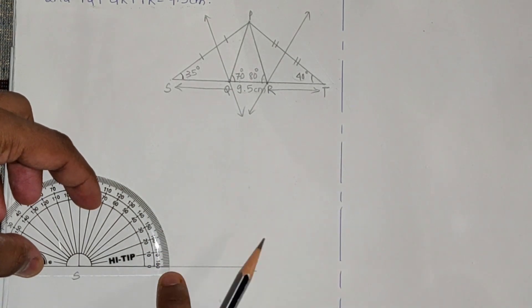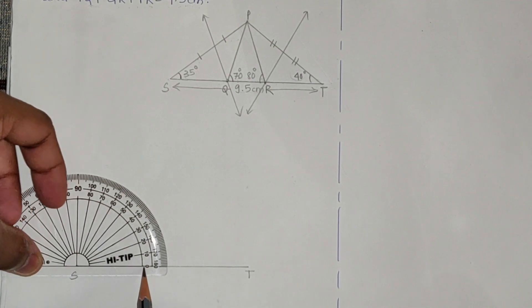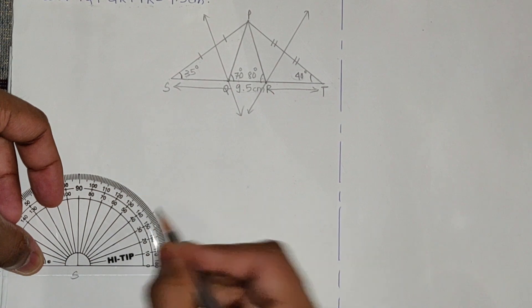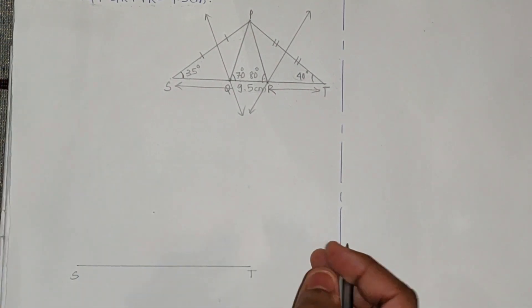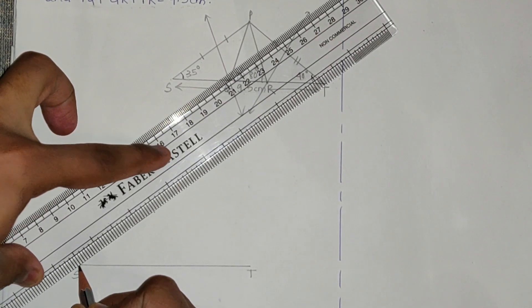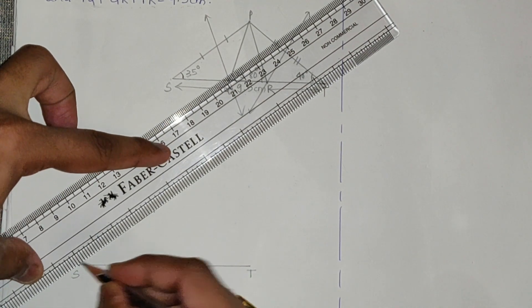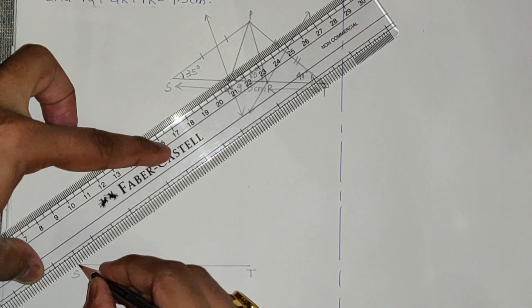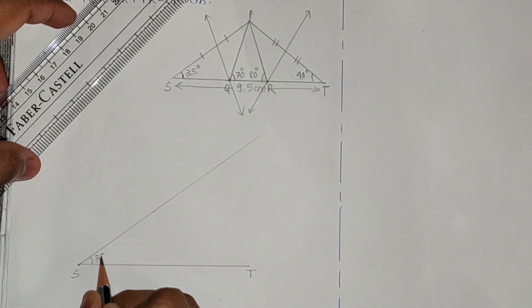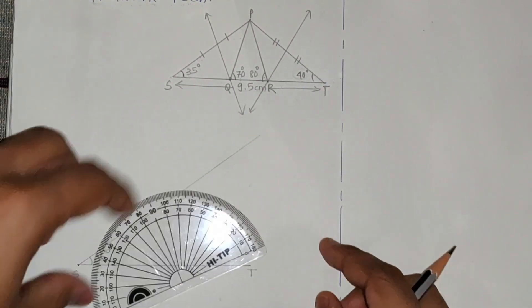Keep the protractor on S and align it perfectly with the line. Since the line moves towards the right, start from 0. Count 10, 20, 30 and between 30 and 40 this will be 35 degrees. Draw the line at 35 degrees. Then for the right side, take 40 degrees as indicated in the rough figure.